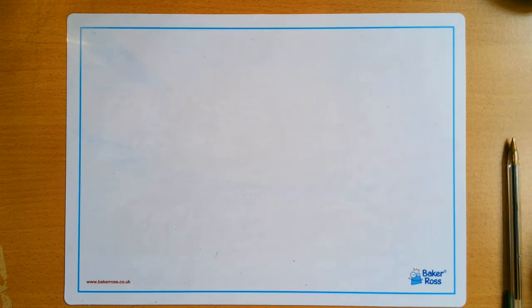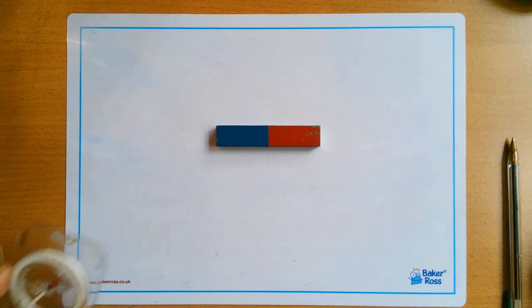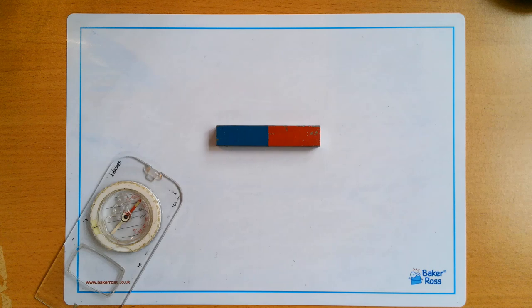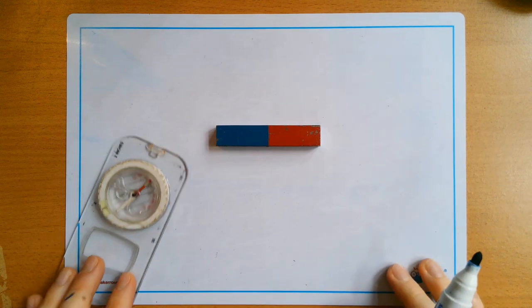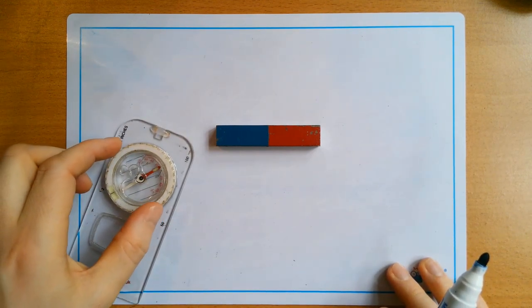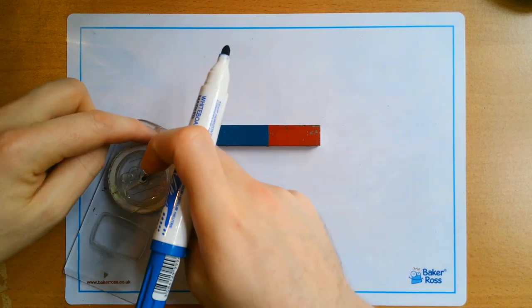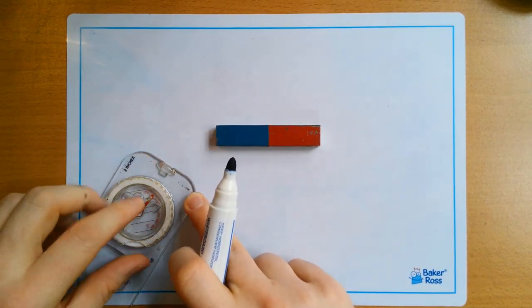Now unfortunately due to the lockdown I don't have my plotting compasses with me. What I do have is an actual compass, so I'm going to try my best to show the practical. The only difference between a plotting compass and a normal compass is this would be a lot smaller and you wouldn't have the whole thing around it. You'd just have this circular bit with the actual compass.